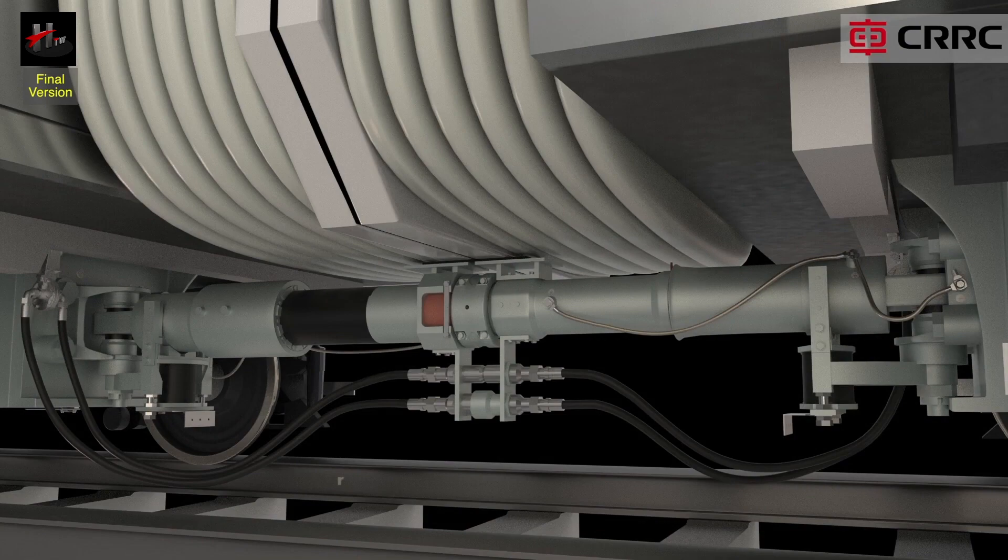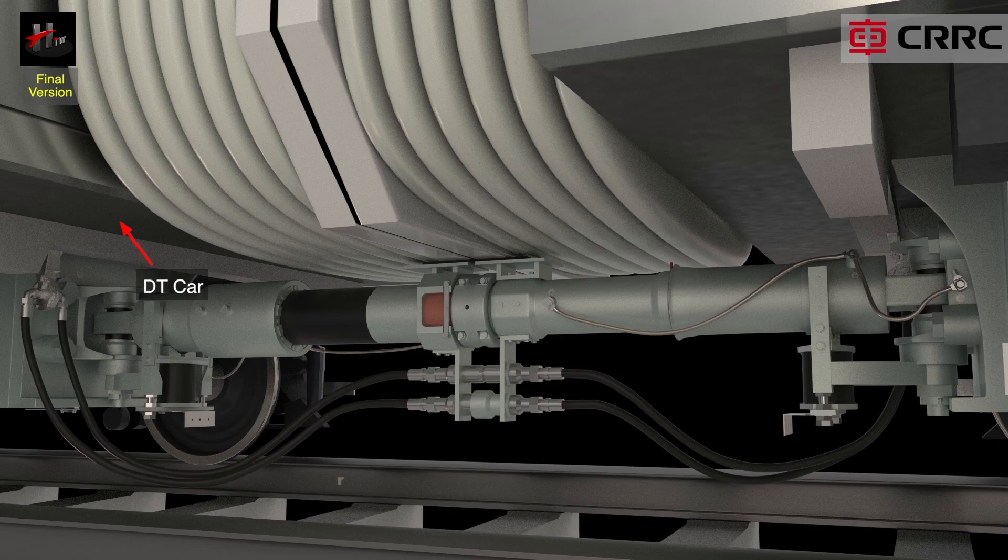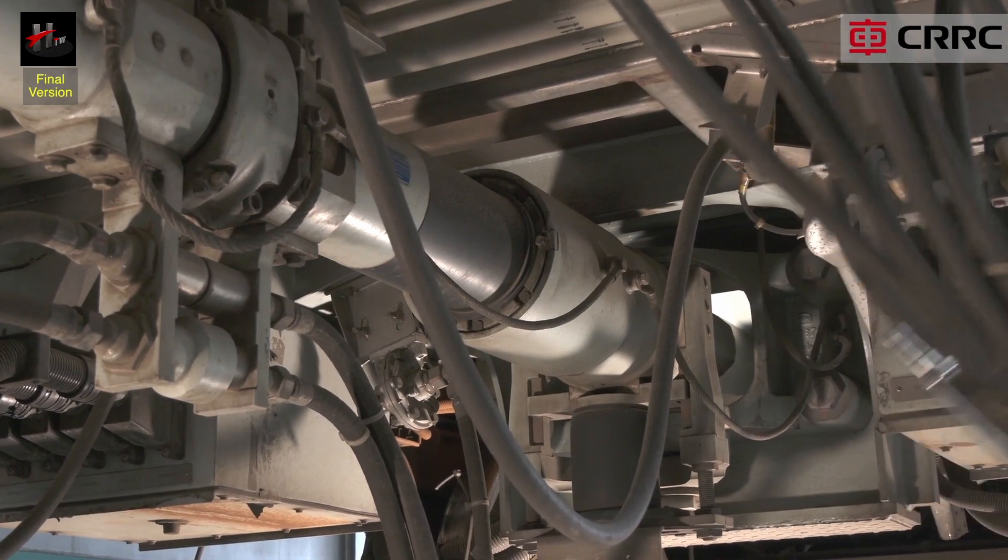The semi-permanent coupler with buffer is located on the DT car. It is a mechanical coupler that couples with the semi-permanent coupler of M car and joins the DT with the M car.